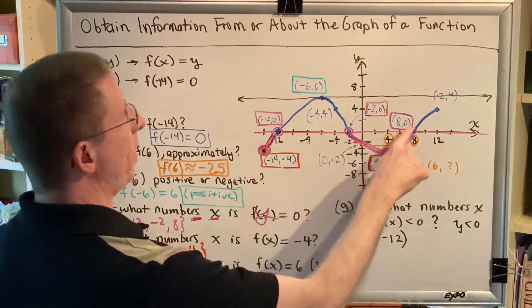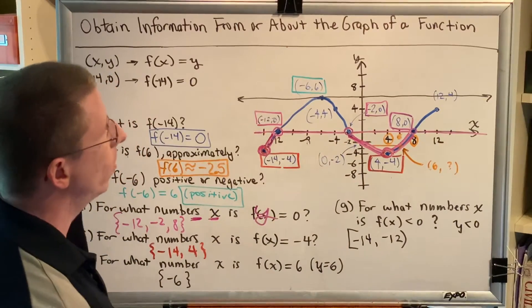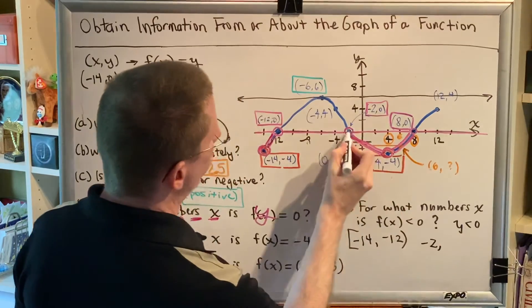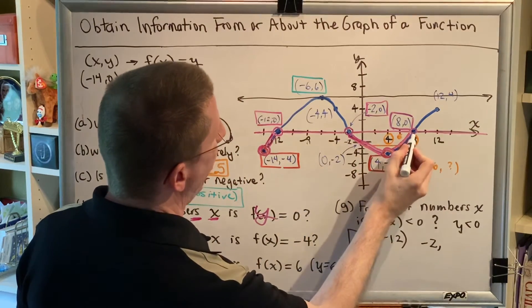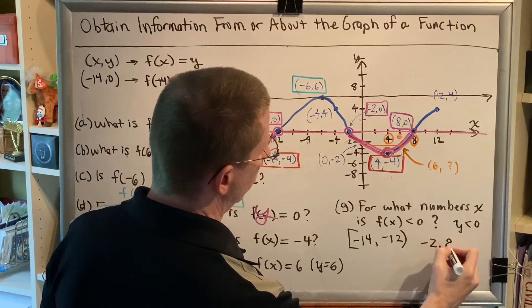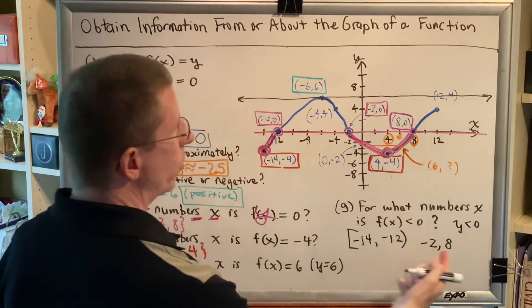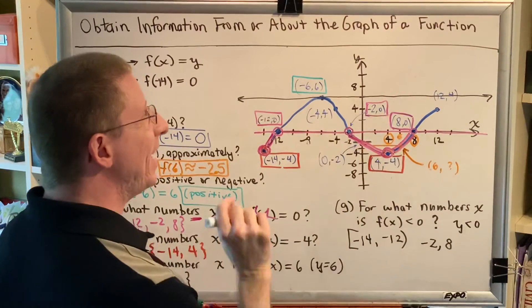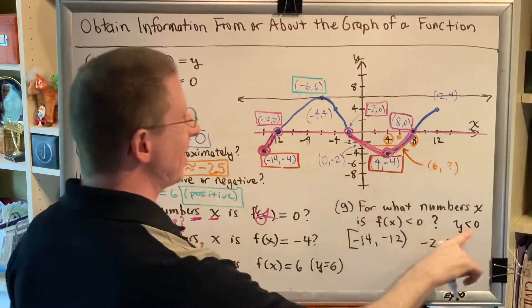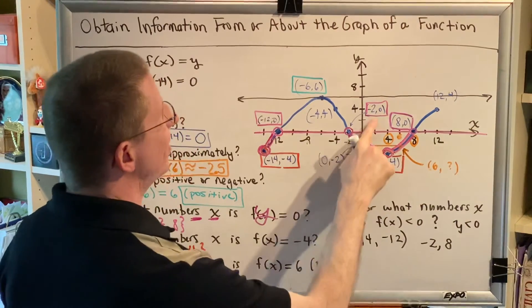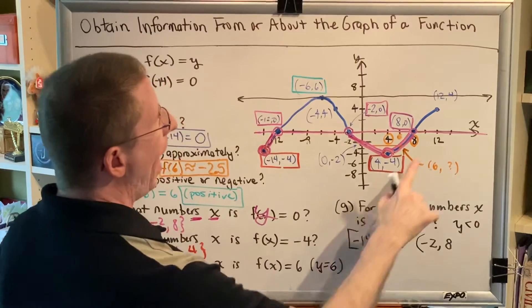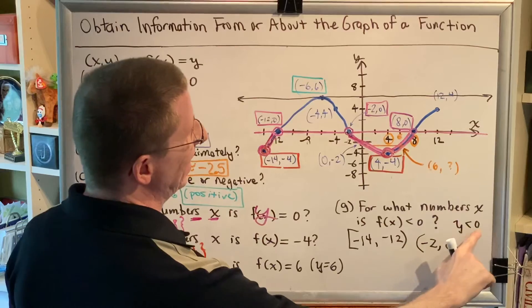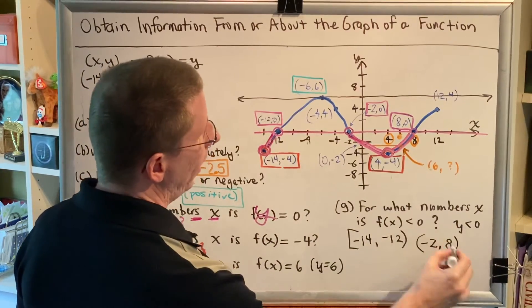Now we move on to the second piece where we are less than 0. The x's are negative 2, and as we travel along, we go all the way to where the x's are 8. Now we just have to figure out what symbols should we put here. Well, at negative 2, y is 0, which is not less than 0, so we must exclude negative 2. At 8, y is 0, which is not less than 0, so we must exclude 8.